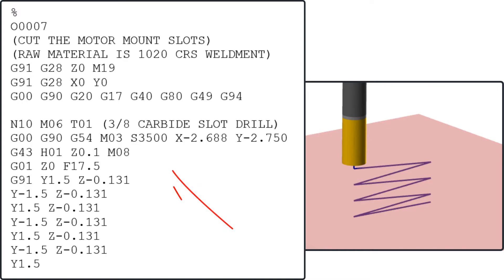First I'll position the cutter over the Y-0.275 end of the slot, start the spindle, then pick up the tool height offset and turn on the coolant. Next I'll feed the tool at 2.5 thou per tooth to the top surface of the part.